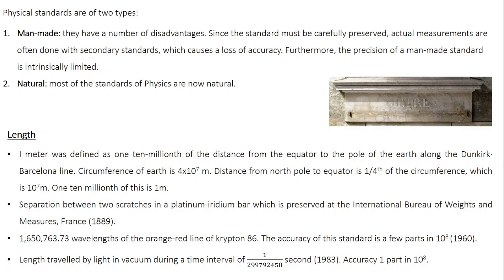An error of one part in 10⁸ means that when you measure 10⁸ meters, you make an error of ±1 meter. Alternatively, you can have a natural standard — for example, for defining time, you can use the frequency of an electronic transition happening inside an atom. An atom exists naturally in the world, so you can use a natural standard. In fact, most of the standards in physics are now natural.